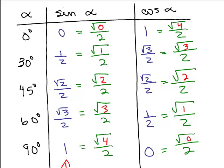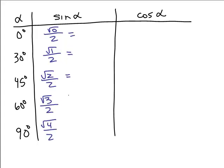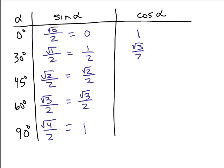So how could you get the pattern again? If you're taking a test and you want all those values without figuring it out each time, you could do this: I know the sine of 0 is 0, so that's the key — start with square root of 0 over 2, square root of 1 over 2, square root of 2 over 2, square root of 3 over 2, square root of 4 over 2. Simplify each one and you get the sines: 0, one-half, square root of 2 over 2, square root of 3 over 2, and 1. For cosine, just reverse the order: 1, square root of 3 over 2, square root of 2 over 2, one-half, and 0. I've never memorized it myself — I just always figure it out each time for each problem. That works for me.